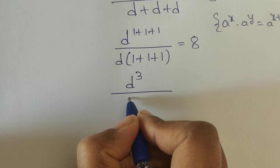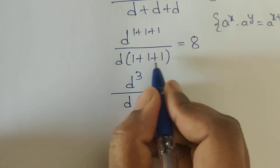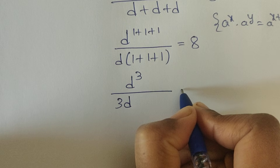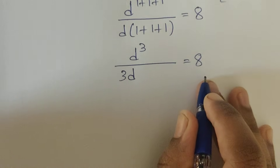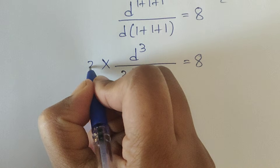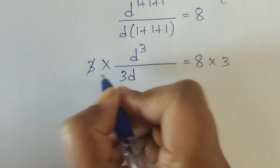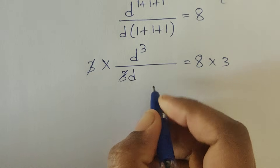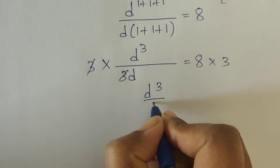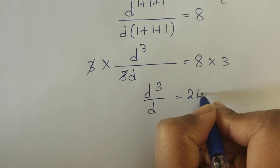So now it will be d to the power of 1 plus 1 plus 1, which equals d cubed, divided by d times 1 plus 1 plus 1, which equals 3d. So d cubed divided by 3d is equal to 8. Now multiply both sides by 3, so the 3 on both sides cancels, giving d cubed divided by d is equal to 8 times 3, which is equal to 24.